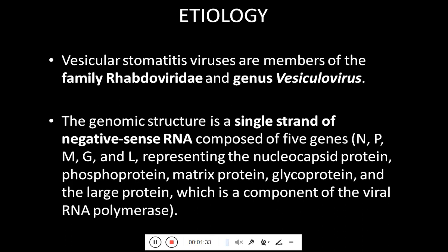The vesicular stomatitis viruses are members of the family Rhabdoviridae and the genus Vesiculovirus. The genomic structure is a single strand of negative-sense RNA composed of five genes: N, P, M, G, and L, representing the nucleocapsid protein, phosphoprotein, matrix protein, glycoprotein, and the large protein which is a component of the viral RNA polymerase.